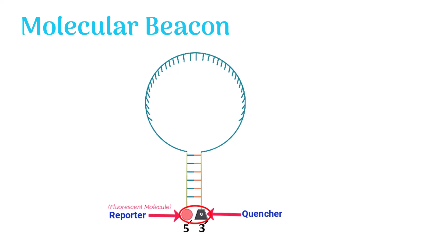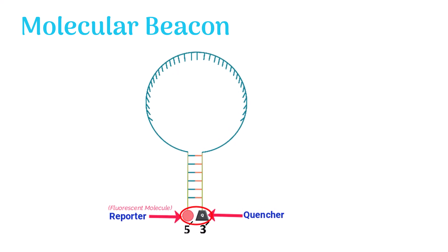When the beacon is in free form, the quencher absorbs energy from the fluorescent dye. This way the quencher blocks the light from the fluorescent dye and the dye does not glow.